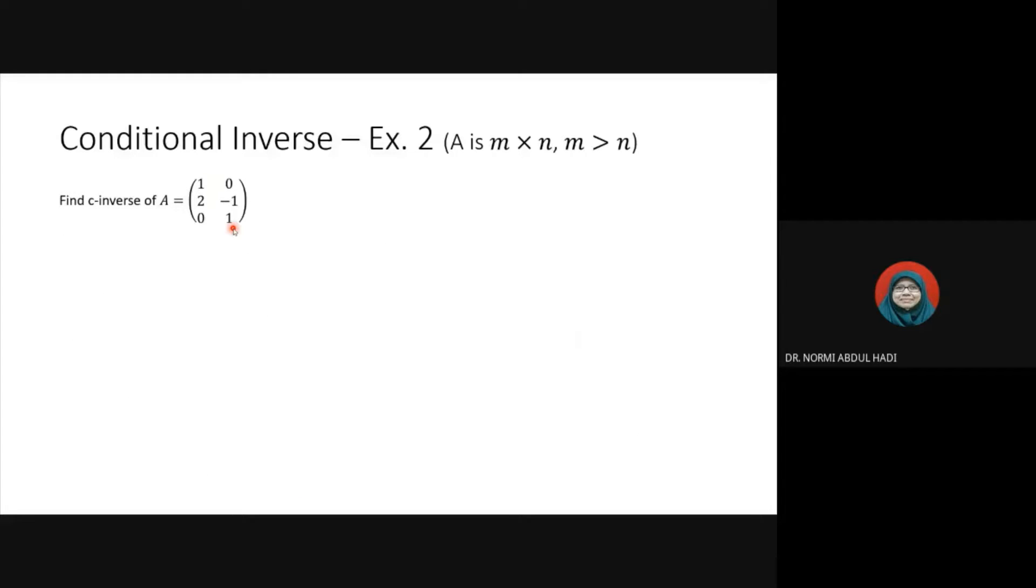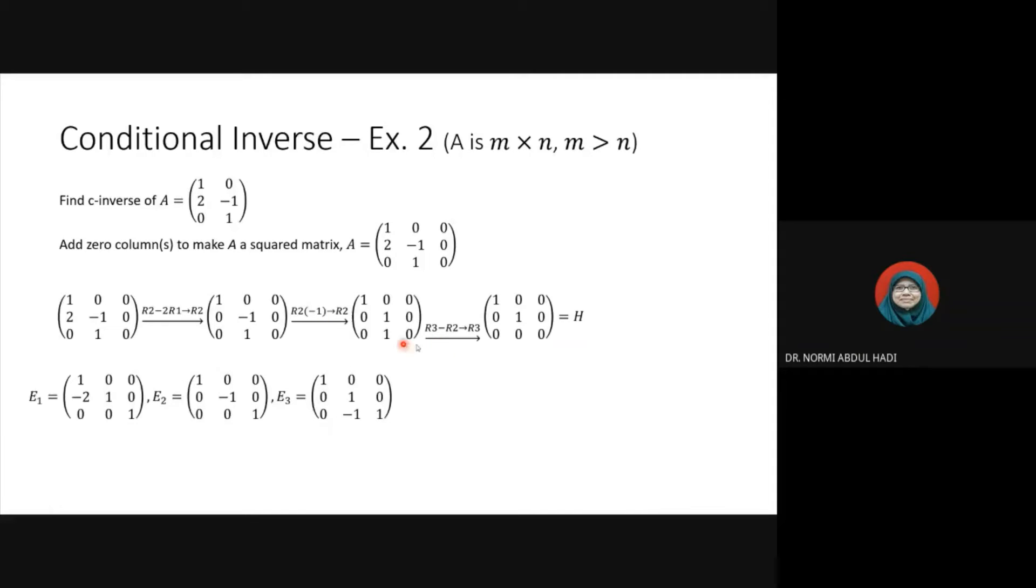Next, we need to add one more column: zero, zero, zero, zero. Then we reduce to Hermite form. They are upper triangular and so on. This is Hermite form. Since we have three elementary matrices, we have three row operations, three elementary matrices.